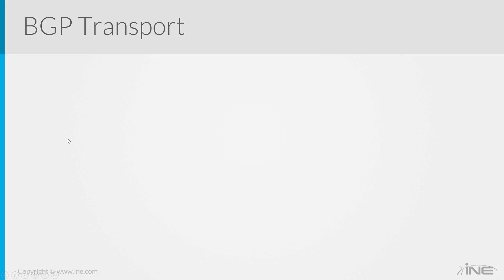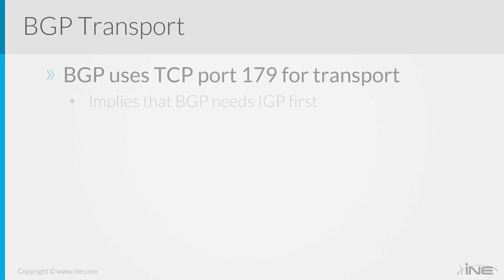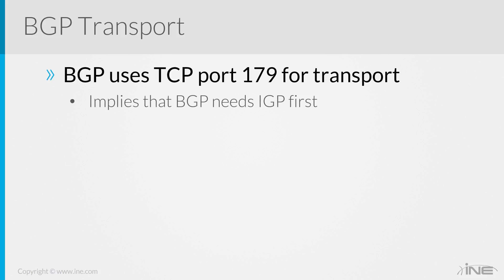When it comes to BGP transport, BGP uses port 179 for transport. It implies that BGP needs IGP first. Why does it need IGP? For next-hop processing.